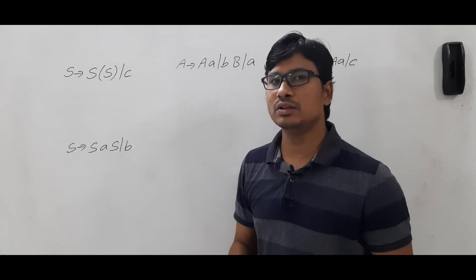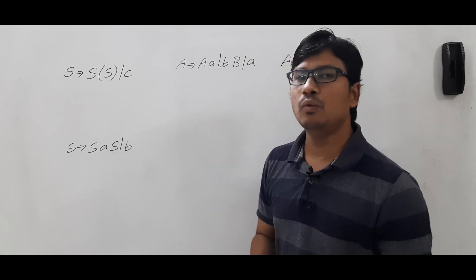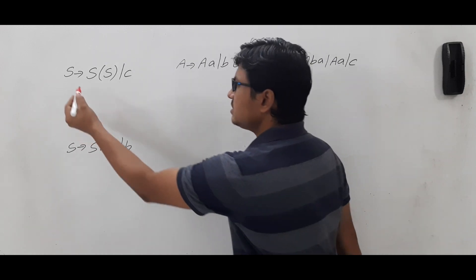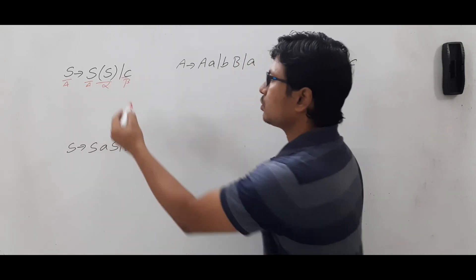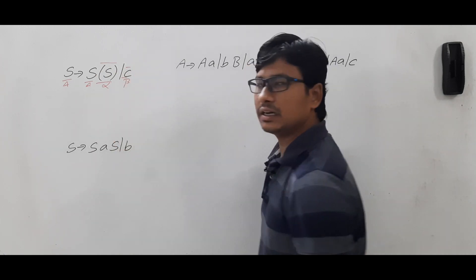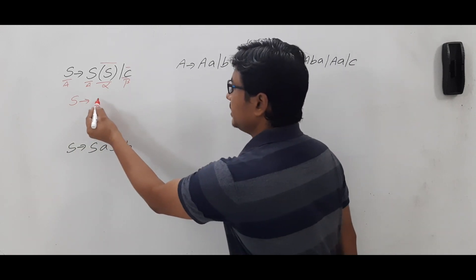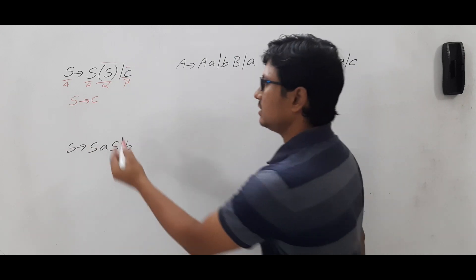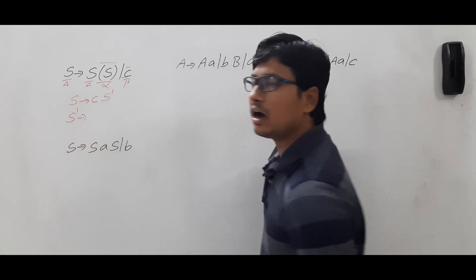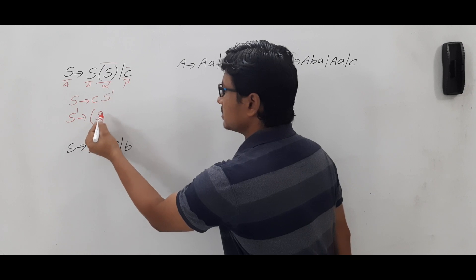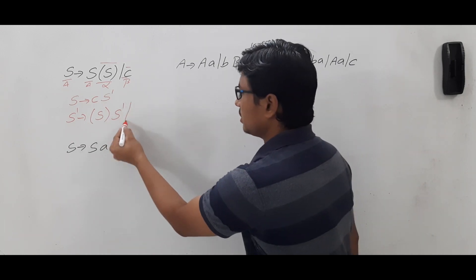So I can say that it is a recursion and also a left recursion. If I want to convert it into an equivalent right recursion grammar, we check that this is in the form of A → Aα | β. I am considering this part as alpha and this as beta. So how can I convert it? It will be S → β A′, where beta is c. Then A′, which is S′, → αS′ | ε, where alpha is {S}.